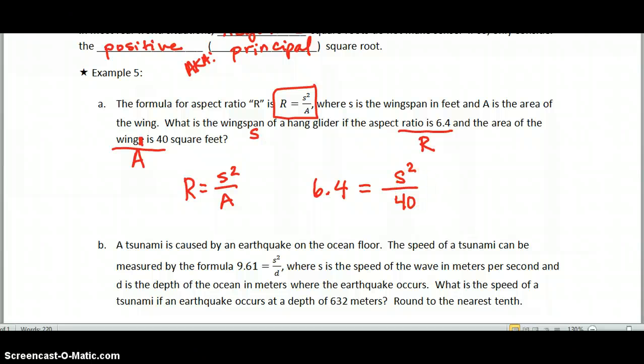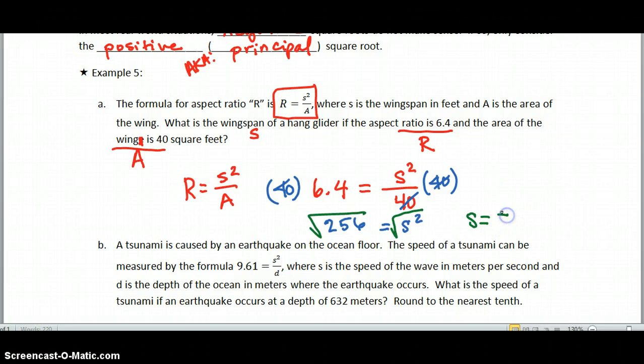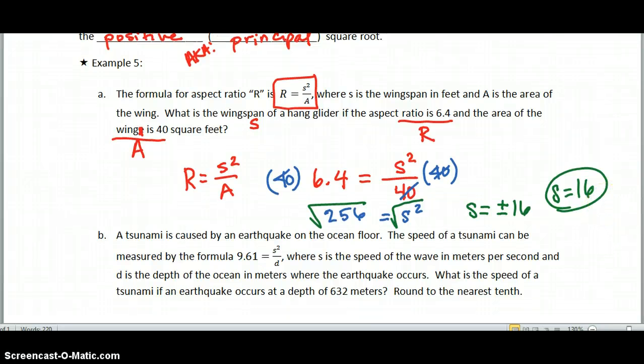So the first thing I have to do is undo what's happening to my S squared, and it's being divided. So the opposite, or the inverse operation of division, is multiplication. So we're going to multiply both sides by 40. These 40s will cancel, and I have S squared equals 40 times 6.4 gives me 256. So now, to get S unsquared, I'm going to be taking the square root of both sides, and the square root of 256, if you didn't know, is 16. So, in an algebra problem, we would say S equals positive or negative 16. But for this problem, what are we looking for? The wingspan of a hang glider. Can a hang glider have a negative wingspan? No. So we know that the wingspan must be the positive, or the principal square root, which is 16.